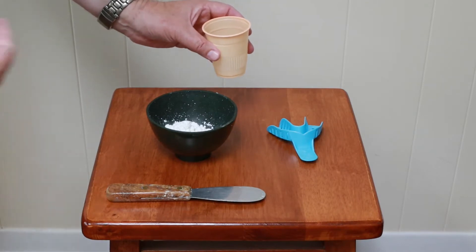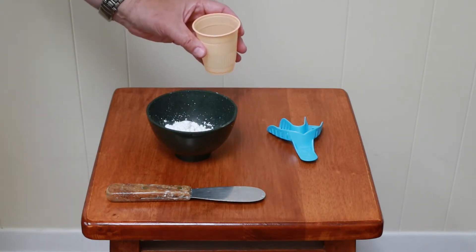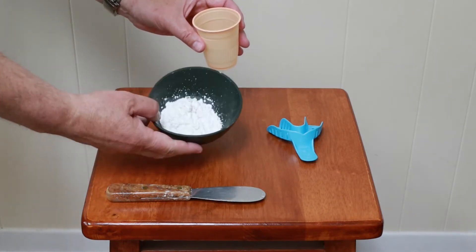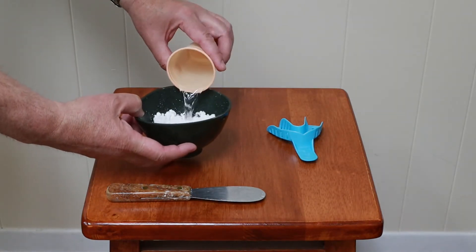And the reason I'm using a little bit less is so that the alginate will be a little bit thicker, a little firmer. It'll just make it easier to take the impression without it oozing all over my mouth. All right, so the first step, you have the powder in the bowl, and you add the water to it.